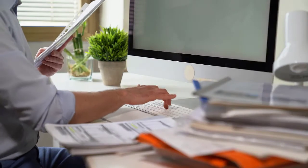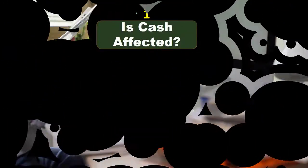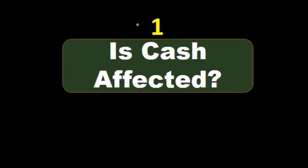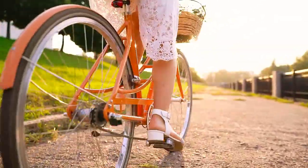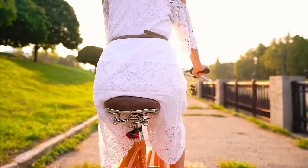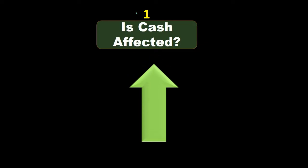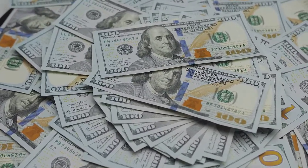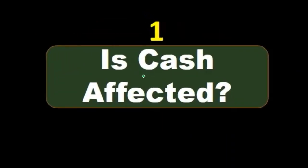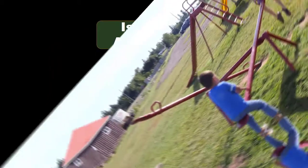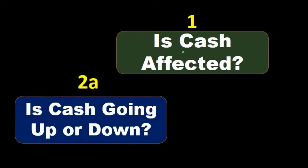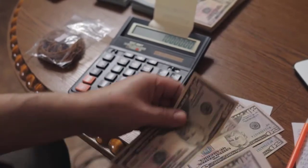Therefore, this thought process will be applied to the accounting equation when recording transactions. A similar thought process will also be applied when working with debits and credits. We're going to start with the question: is cash affected? Cash is going to be involved in many of the transactions — pretty much all cycles including the accounts receivable cycle, revenue cycle, accounts payable cycle, purchasing cycle, and payroll cycle. Not every transaction will have cash involved, but cash will be involved far more times in journal entries than any other account, so we start by thinking about cash first.